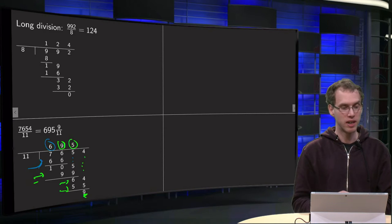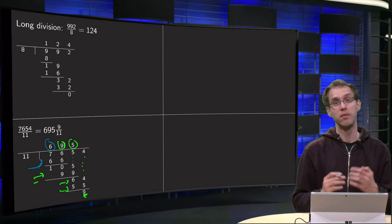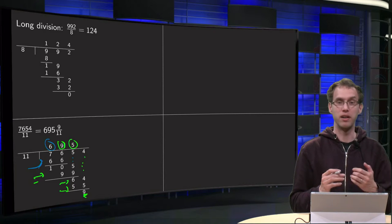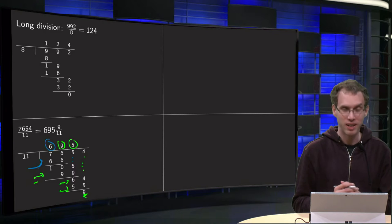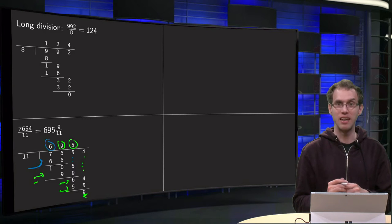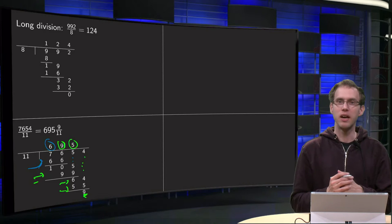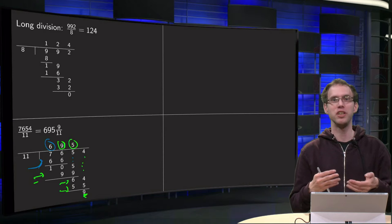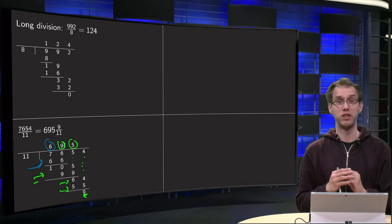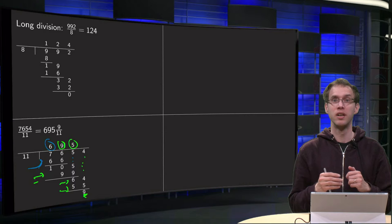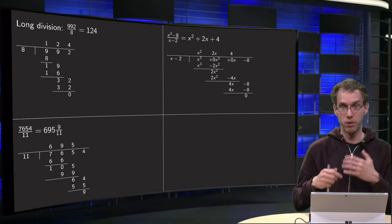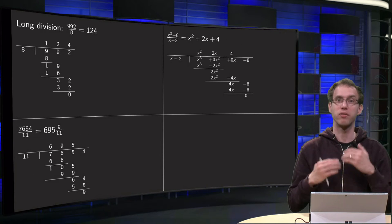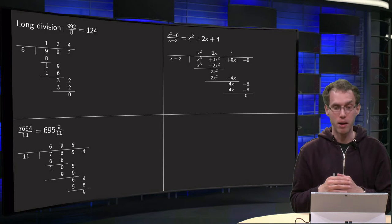So what's the result? 7654 divided by 11 equals 695 with a remainder of 9 elevenths. You see that this procedure will help you with all divisions of all numbers. We would now like to continue with the polynomials.